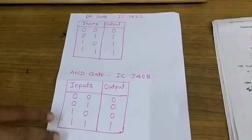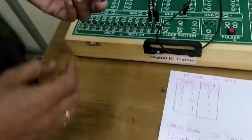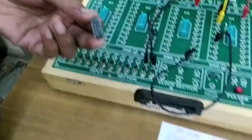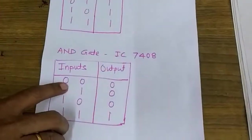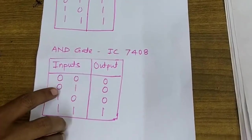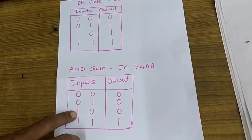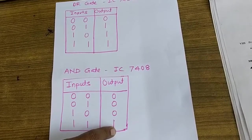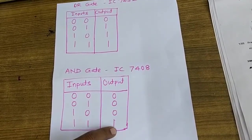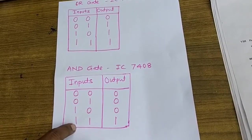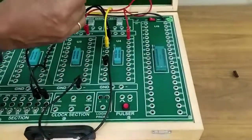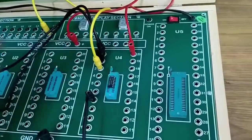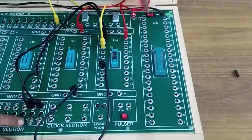The second basic gate is the AND gate, and the IC for AND gate is IC 7408. Again it is a 14-pin IC. The truth table of AND gate is as follows: when both inputs are 0, output is 0; when input is 0 and 1, output is 0; when first input is 1 and second input is 0, output is 0; and when both inputs are 1, then output is 1. To summarize, output is 1 only when both inputs are 1. I will insert this AND gate IC that is 7408 into this slot, fix it, and switch on the board.